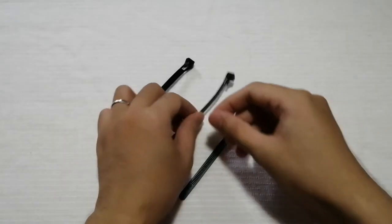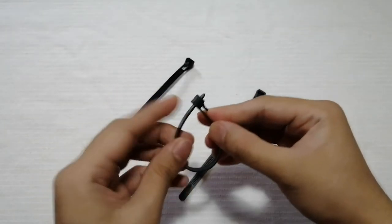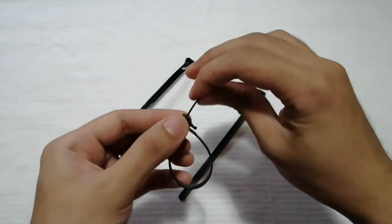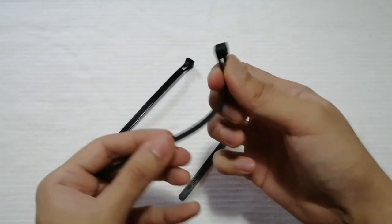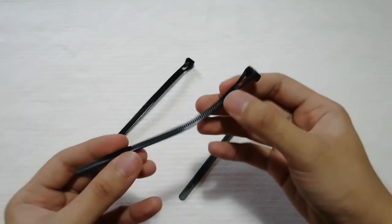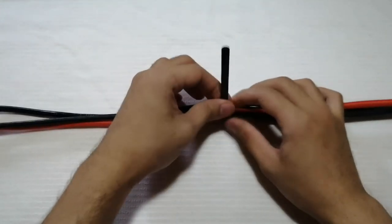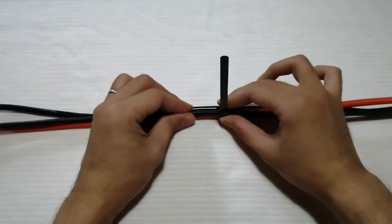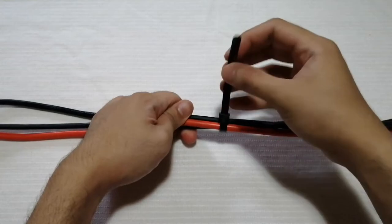Reusable zip ties. These are my personal favorite. It functions just like a zip tie, but can be used again and again. With its releasable ratchet mechanism, it's a bit wider for a better grip, and has a very stable hold. However, it is more expensive than ordinary zip ties, and cutting the excess off is a waste.